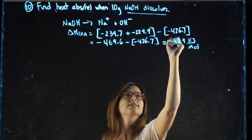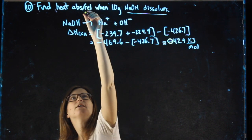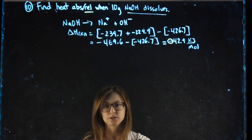We end up with negative 42.9 kilojoules per mole. Because it's negative, because the heat of reaction is negative, we know the heat will be released by this reaction.